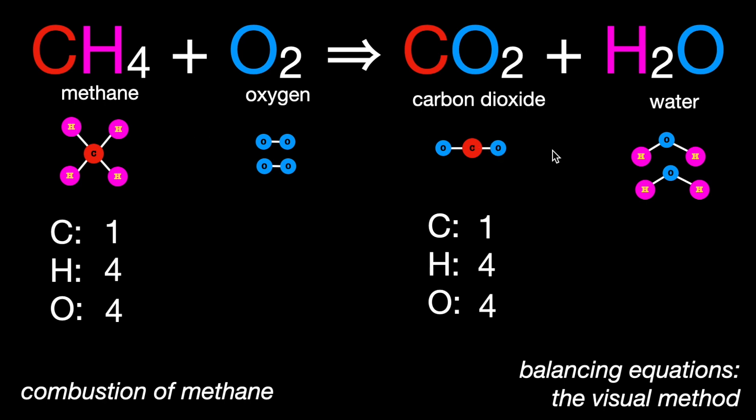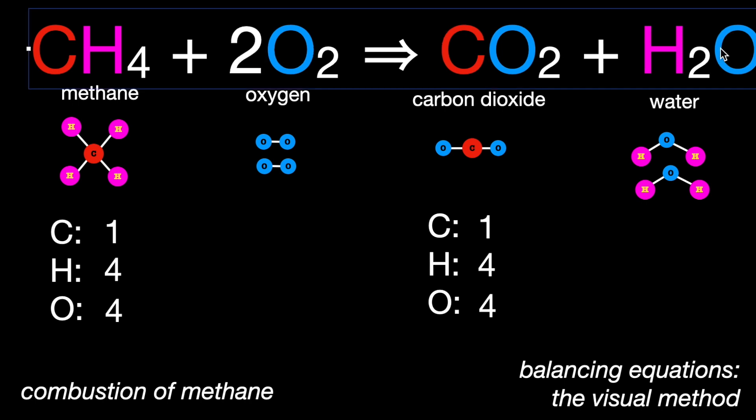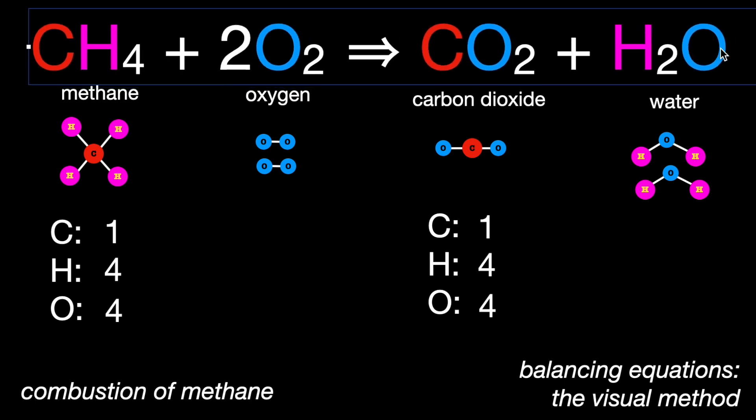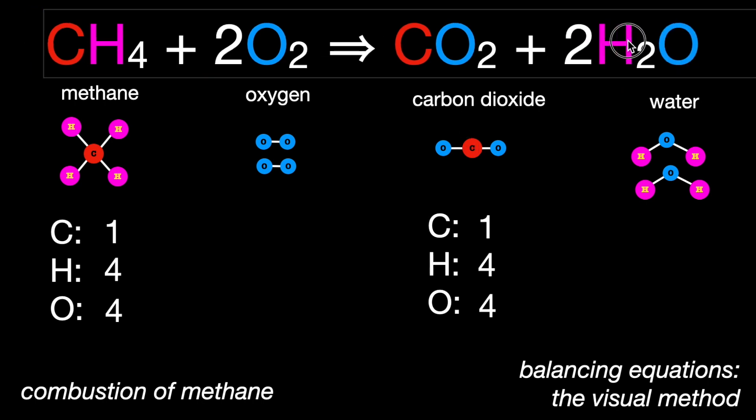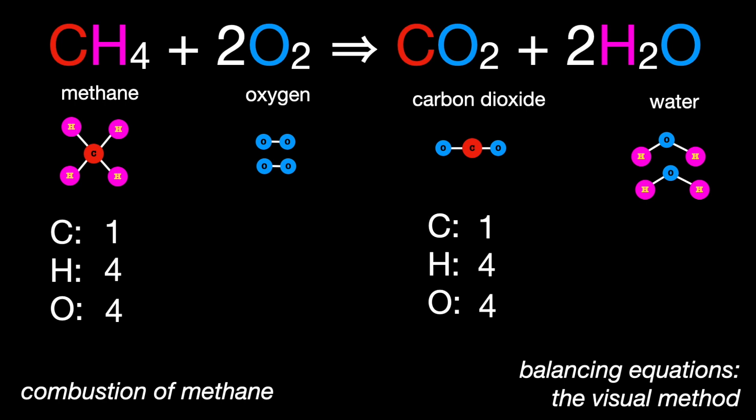Overall, this is now a balanced equation with the pictures, and so we need to change what we're saying in the top equation. We still have one methane molecule, but now we have two oxygen molecules to make this fit. And we still are left with one carbon dioxide, but now we're left with two water. And so that is the balanced chemical equation for the combustion of methane.